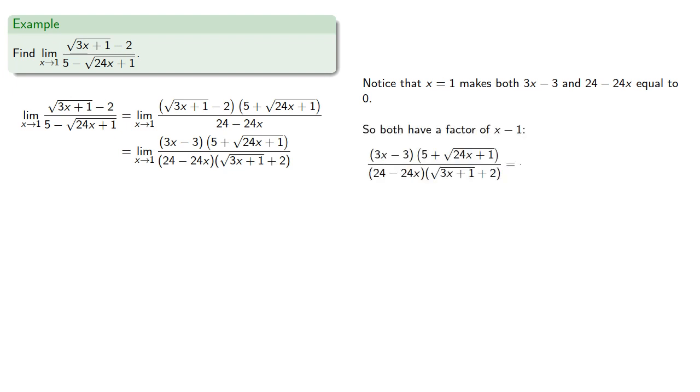our factor theorem says these both have a factor of x minus 1. So 3x minus 3 must be x minus 1 times 3. And 24 minus 24x must be x minus 1 times negative 24.